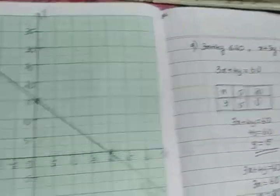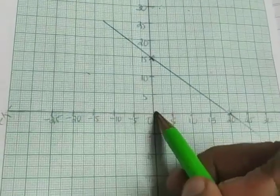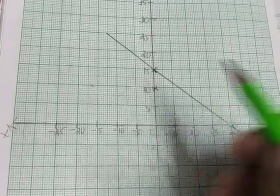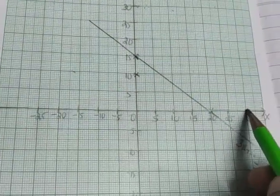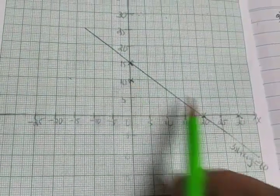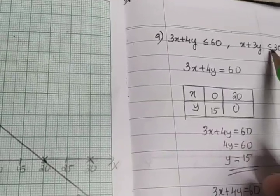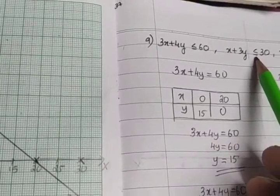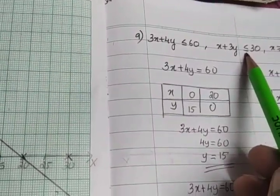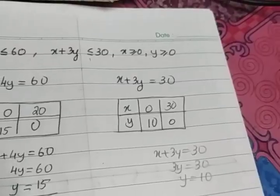Mark the point (0, 10) — 0, 10 will be here — and (30, 0) will be here. Join these two points using a straight line, because the inequality is less than or equal to, so it is a solid straight line.